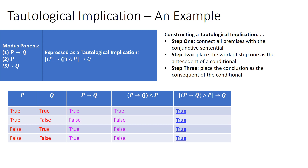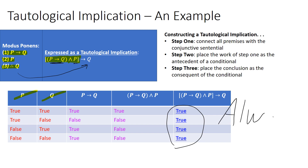Our next example is modus ponens. Modus ponens will never let you down — it is always valid. The argument: first premise, if P then Q; second premise, P; conclusion, therefore Q. We express this as a tautological implication: we take our two premises, if P then Q and P, place them in a conjunctive relationship as the antecedent to a conditional, and Q appears as the consequent. The truth table has four possibilities and we get an outcome that is always true. That's why modus ponens will never let you down.